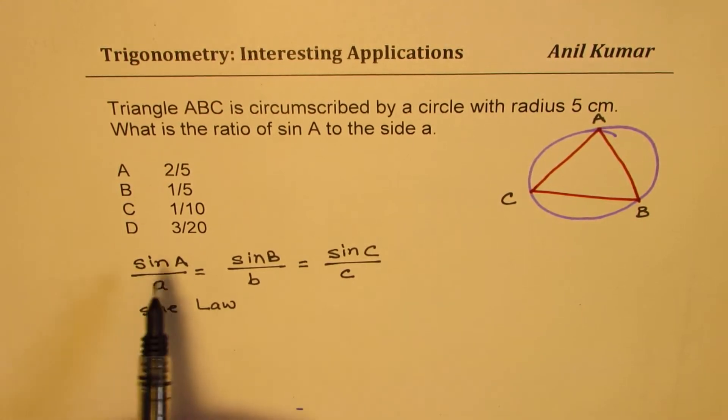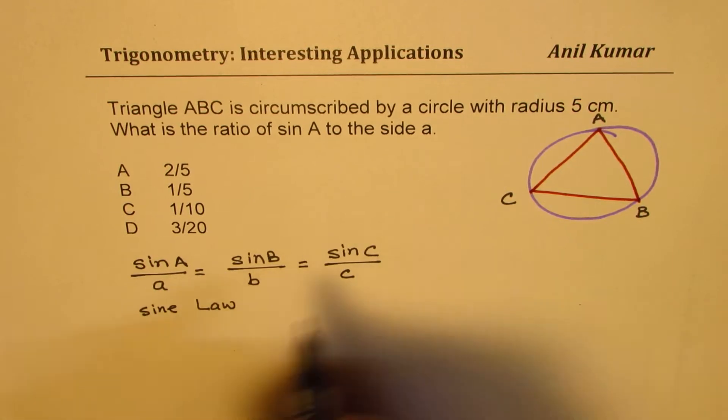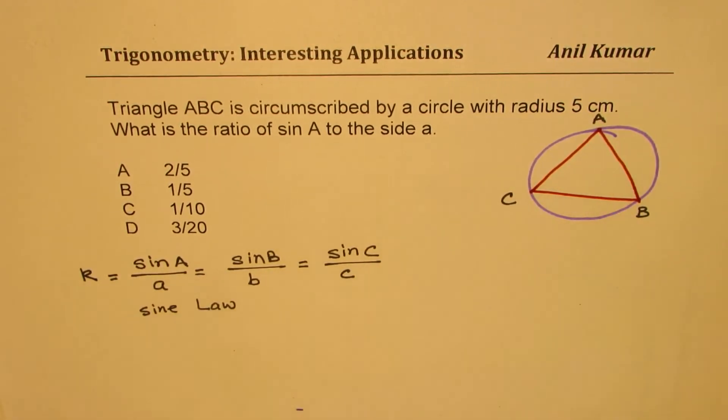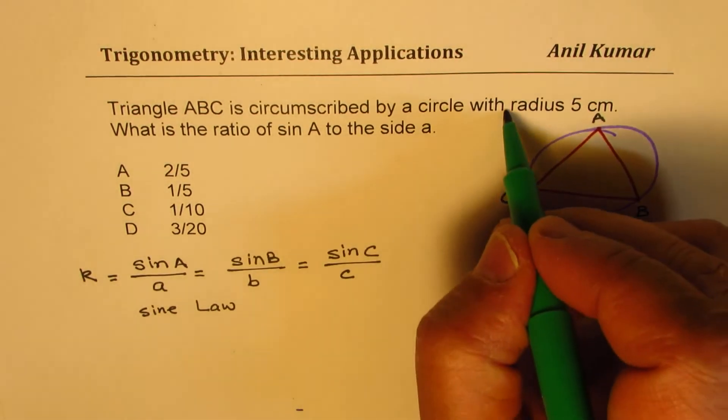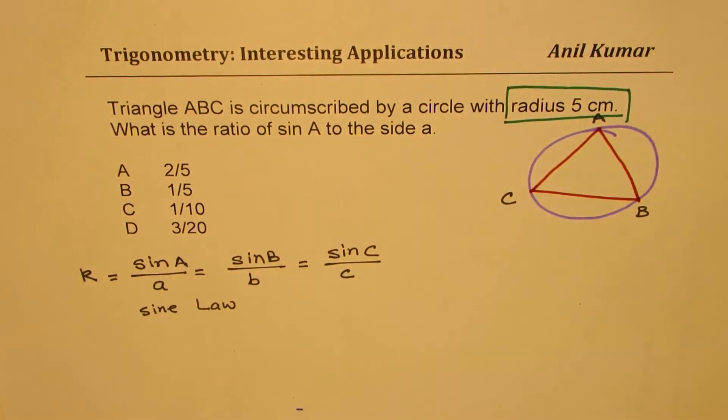But we want to know how much is this? This is a constant. We want to know what is this constant equal to when you have circumscribed a triangle with a circle and we are given the radius as 5 centimeters. So I hope the question is absolutely clear to you. You can pause the video, answer the question and then look into my suggestions.